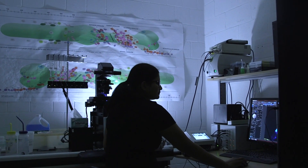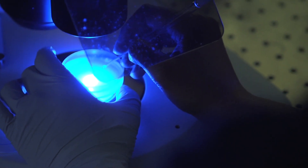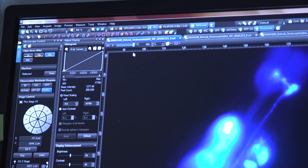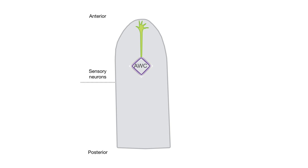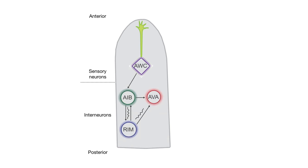We then asked what neurons are involved in regulating this local search behavior and limited food search of a lawn in post-dauer Hawaiian animals. We found there were no changes in sensory neurons like AWC which are involved in food search. However, three interneurons downstream of these food-sensing neurons — AIB, RIM, and AVA — which regulate reversal probability, seem to have higher activity in post-dauer animals both in the context of searching for food off a bacterial lawn and when there is no food around. These three neurons control the reversal output of the animals and restrict their search areas.